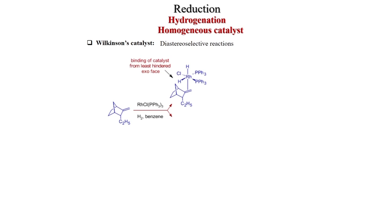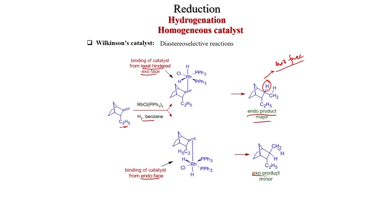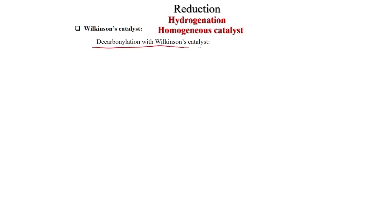Diastereoselective reaction: in a norbornene system with an exocyclic olefin and a C2H5 group in the endo position, with Wilkinson's catalyst (RhCl(PPh3)3), H2, and benzene, binding happens from the least hindered exo face. So the catalyst coordinates from the exo (top) face, hydride delivery takes place from the exo face, and you get the endo product as major. The ethyl group causes steric hindrance, so the exo product where hydride comes from the endo face will be the minor product.